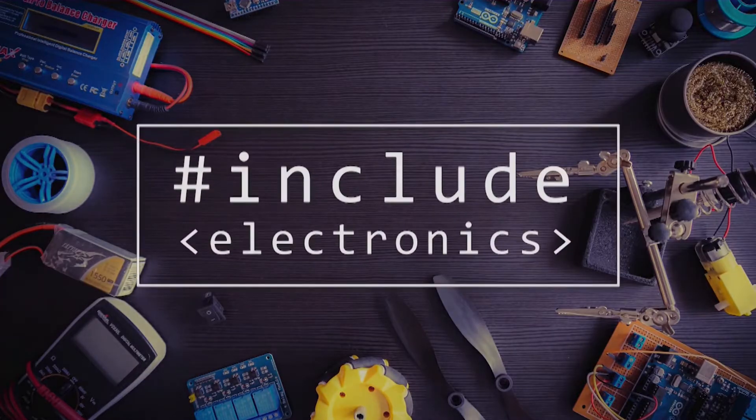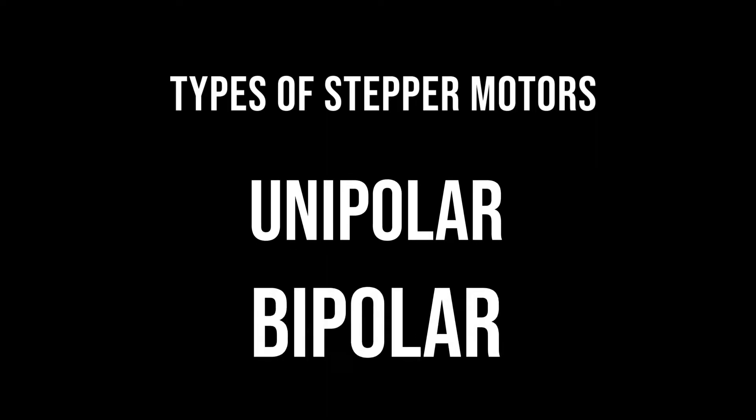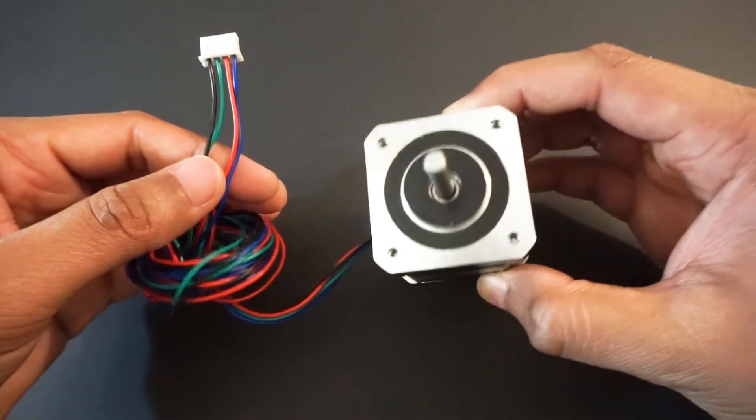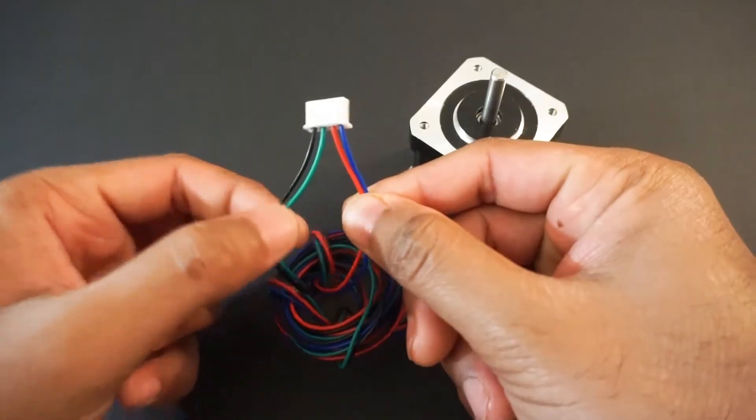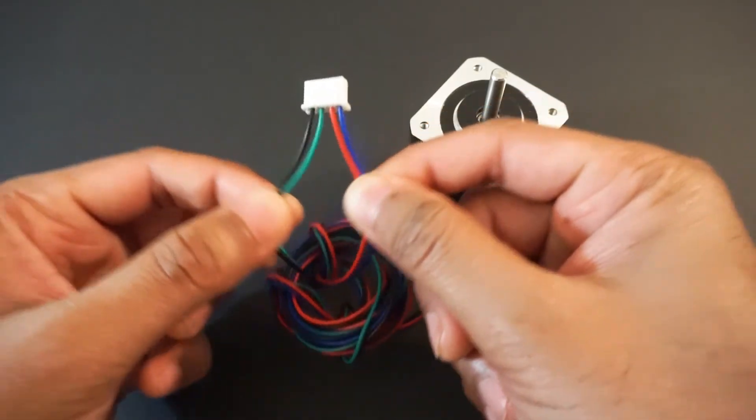If you haven't subscribed, please hit subscribe button below and press bell icon to get latest updates. There are different types of stepper motors, mainly unipolar and bipolar. In our case we will use four-wire bipolar two-phase NEMA 17 stepper motor. This motor has two coils: one coil with A-A' wires and another coil with B-B' wires.